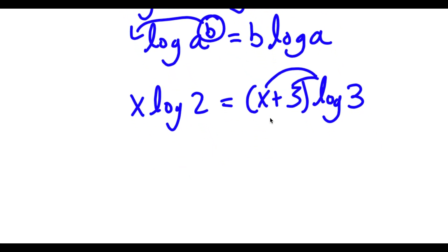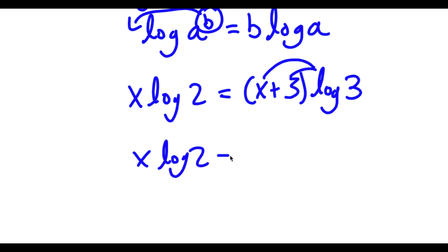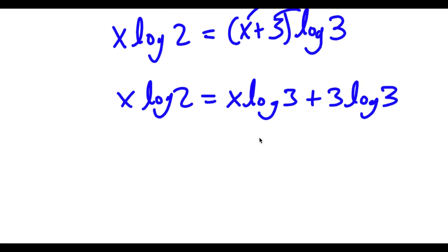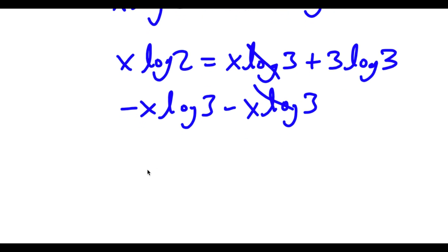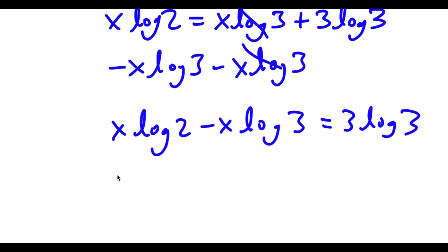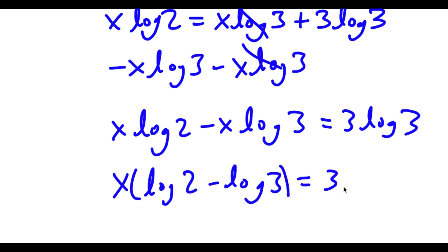Now, if I distribute log 3, I get x times log 2 is equal to x log 3 plus 3 log 3. I'm going to subtract x times log 3 on both sides. Those two cancel out and I get x log 2 minus x log 3 is equal to 3 log 3. Now, if I factor out x, I get x times log 2 minus log 3 is equal to 3 log 3.